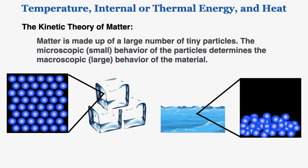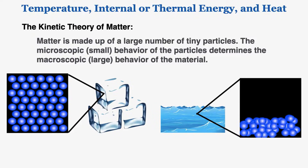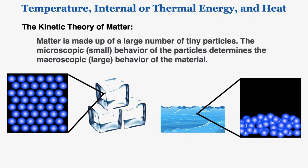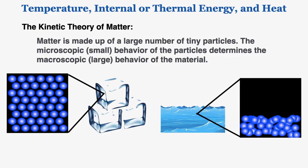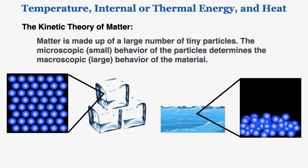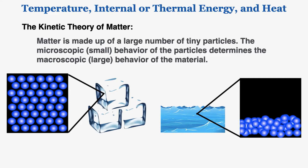Ice feels very cold, it's a solid, and water feels probably warmer and it's a liquid. Now I know that these two things are fundamentally the same as each other — they're both made of H2O. So I want to know where the difference comes from: why is it that ice is a solid and feels cold and water is a liquid and feels warm? The only physical difference causing these two things made of the same material to behave differently is the behavior of the very tiny particles, like the molecules, that make these objects up.